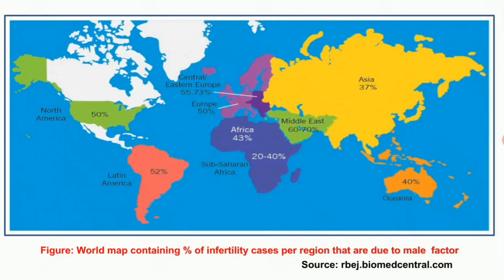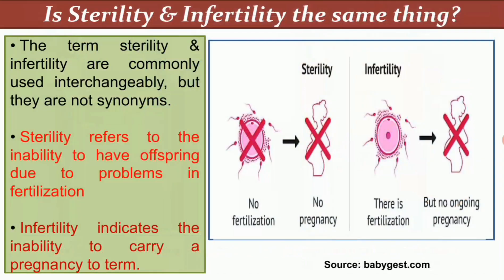This map shows the percentage of infertility cases per region that are due to male factors. Since we are dealing with male sterility, we will mainly focus on infertility caused by male factors. Different regions are shown with their corresponding percentages of infertility caused by male factors.